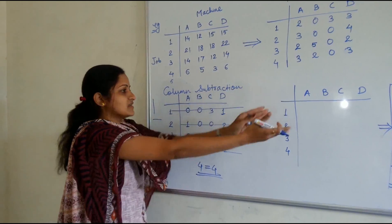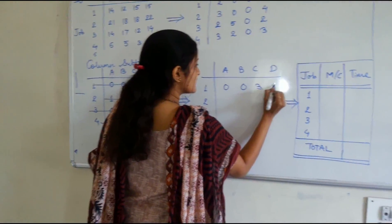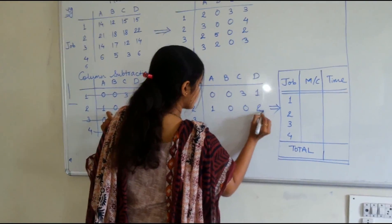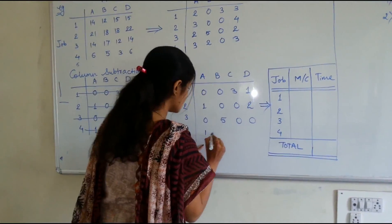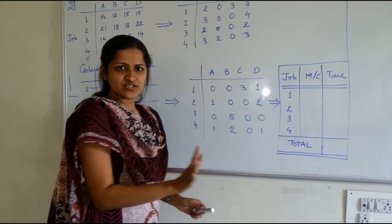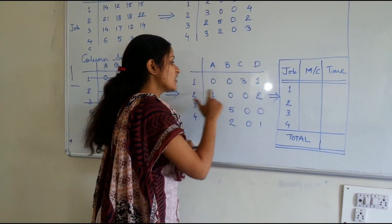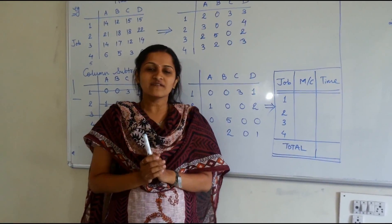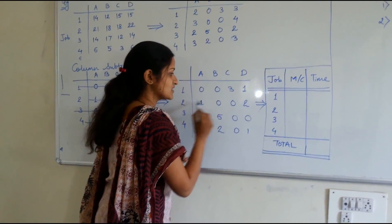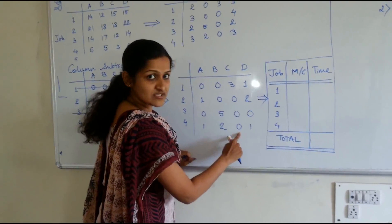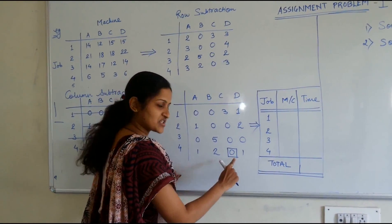Now I will copy all these figures here to find out the final solution. The reduced matrix values are: 0, 0, 3, 1 — then 1, 0, 0, 2 — then 0, 5, 0, 0 — and the last row is 1, 2, 0, 1. To find which job is assigned to which machine, first find whichever row or column contains only one zero, then make the allocation there for sure.